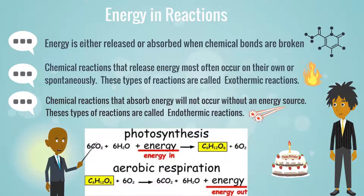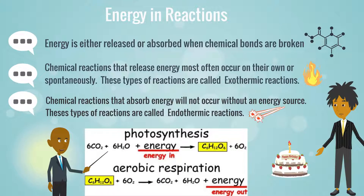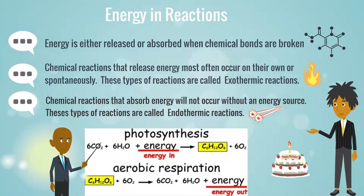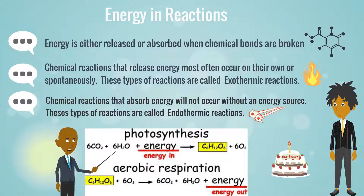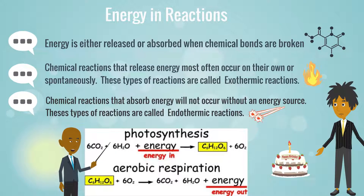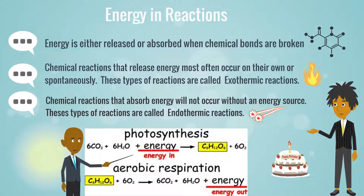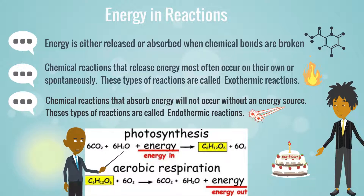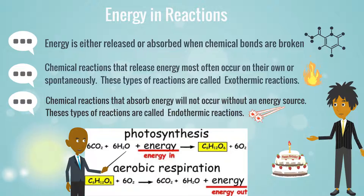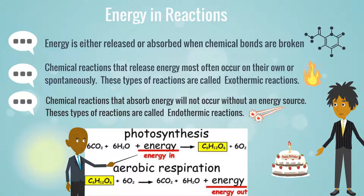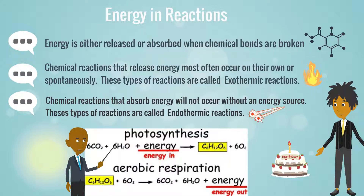Now let's look at aerobic respiration. We have C₆H₁₂O₆ (glucose) plus six oxygen, which produce the products six carbon dioxide plus six water molecules, and we have energy output — so this is an exothermic reaction. We do this every day: the glucose from food we eat plus the oxygen we breathe in produces carbon dioxide, water, and energy in the form of thermal or heat energy.